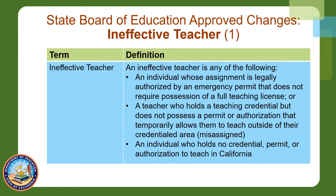California's refined definition of an ineffective teacher includes individuals that are teaching with emergency permits and misassigned teachers — those that are teaching outside their credentialed area without a temporary permit which would allow them to do so. Finally, an ineffective teacher would be someone teaching without a credential.